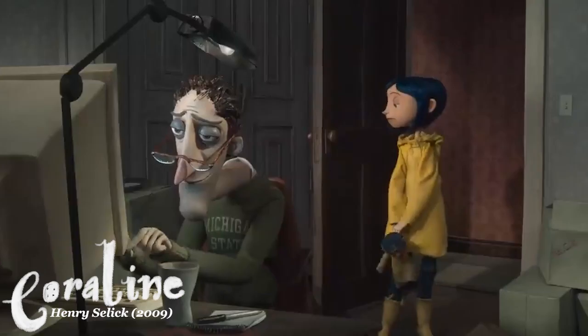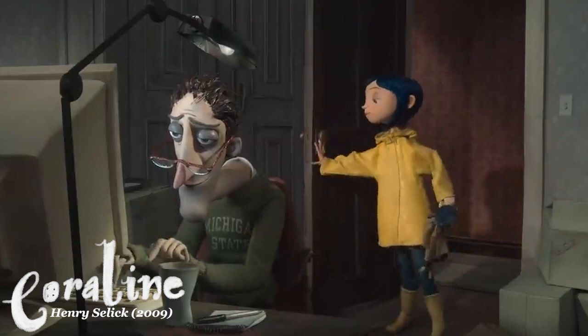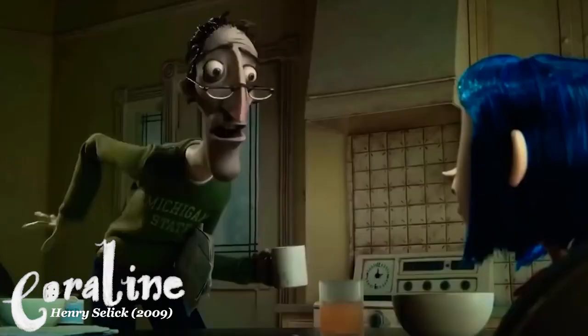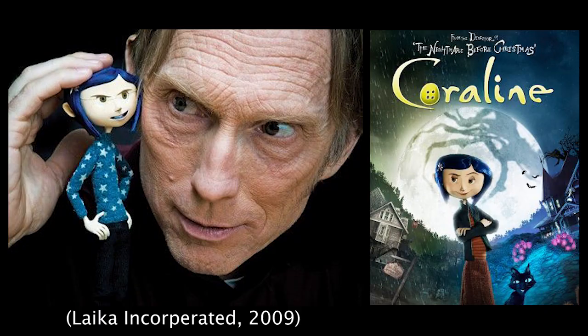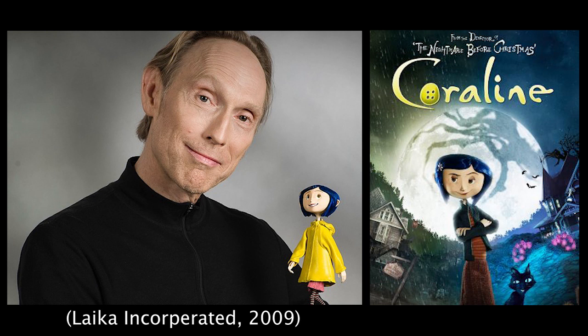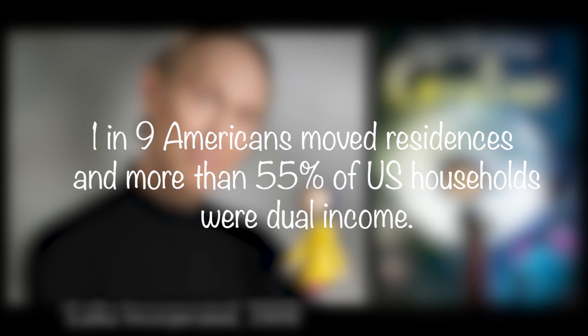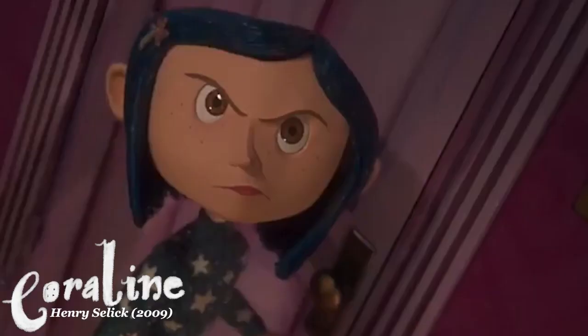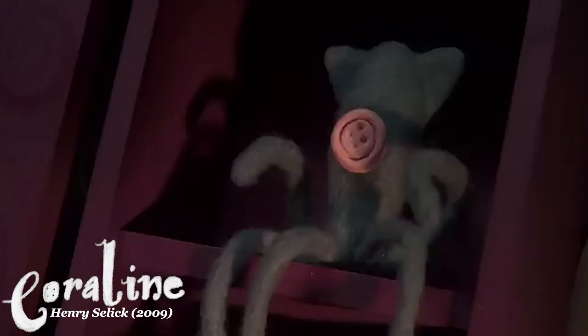This stop-motion film reflects a modern dual-income family with loving but busy parents dealing with the upheaval of moving to a new place. Modern audiences can relate to Coraline's boredom and frustration with her distracted parents. In fact, in 2009 when Coraline was released, a report from the U.S. Bureau of Labor Statistics approximated that 1 in 9 Americans moved residence, and more than 55% of U.S. households were dual-income. With its message of 'be careful what you wish for,' Coraline reflects on how not everything is as it seems, exploring how one person's perspective differs from another's — particularly between parent and child.